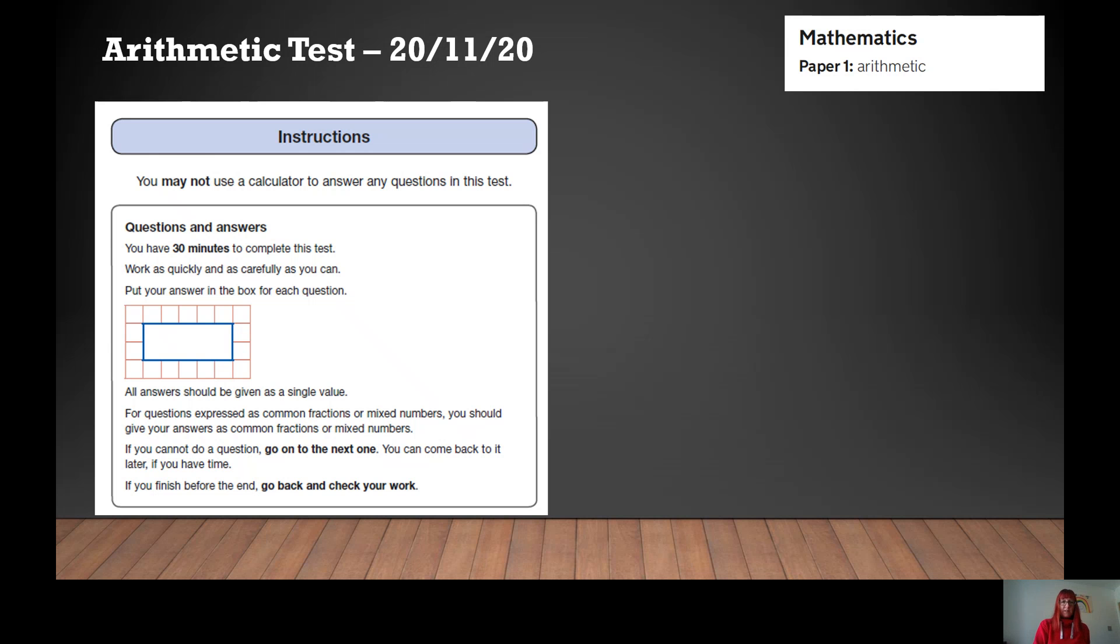OK, instructions. Firstly, you may not use a calculator, so don't head for your mobile phone and the calculator part there. Use your brain. Questions and answers. You have 30 minutes to complete this test. More of that in a moment. Work as quickly and carefully as you can. And then it says about putting your answers in the box.